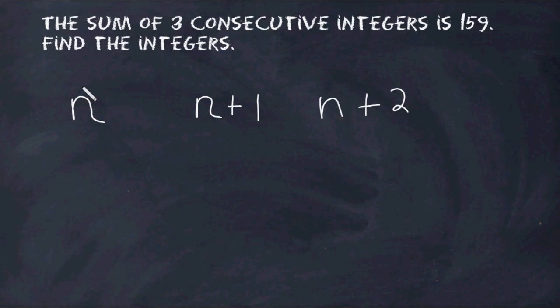So now we have to take whatever our first integer is and add it to the second integer and add that to the third integer. And that will have a sum of 159. Now we have an equation where we can solve for n and figure out what the first integer actually is.